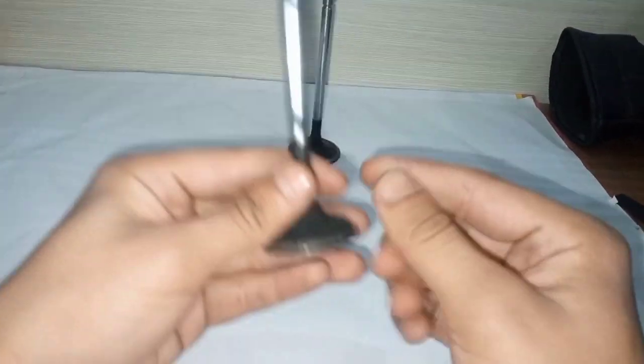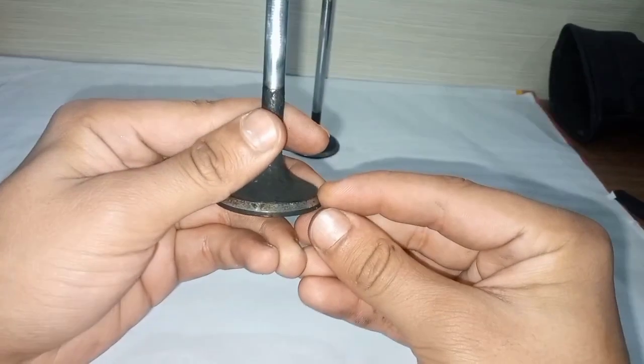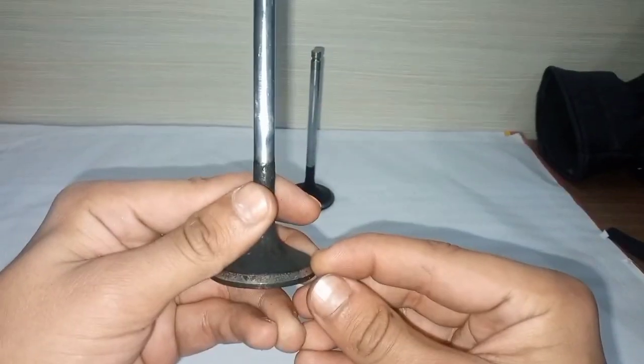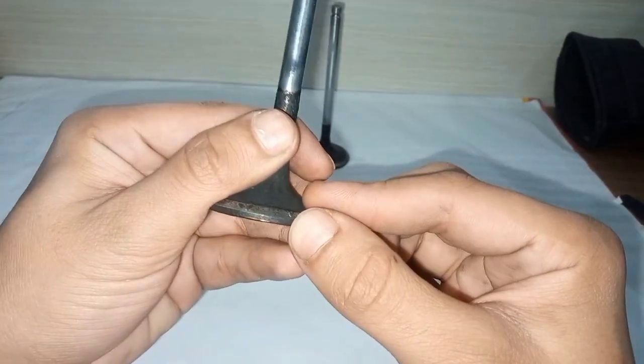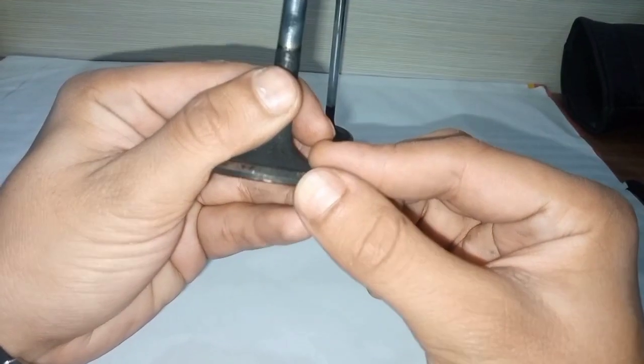Then we have this inclined area, which is known as the valve seat face at a 45 degree angle. Then we have this black area marked here, known as the valve margin.